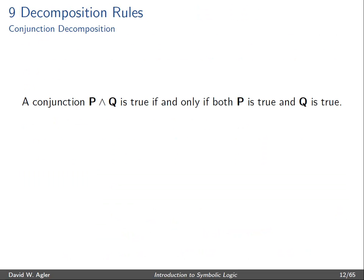So let's look at some examples of specific decomposable proposition types and their corresponding decomposition rule. A conjunction is true if and only if both P and Q are true — that is, both of its conjuncts are true. And so we will stack the conjuncts.